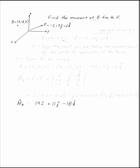Find the moment at B due to the force F. You're told that the Cartesian coordinates of B are (4, -2, 3), and that F is this vector already given to you in Cartesian form: -i + 5j + 2k.